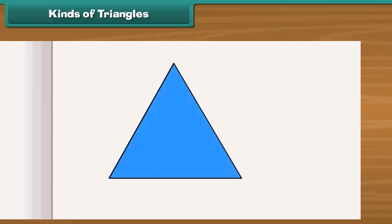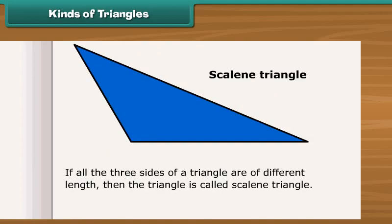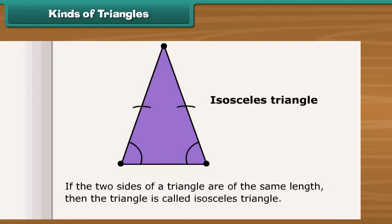The triangles can be classified into three types depending upon the number of equal sides that they contain. If all the three sides of a triangle are of different length, then the triangle is called scalene triangle. If the two sides of a triangle are of the same length, then the triangle is called isosceles triangle. If all the three sides of a triangle are of same length, then the triangle is called equilateral triangle.